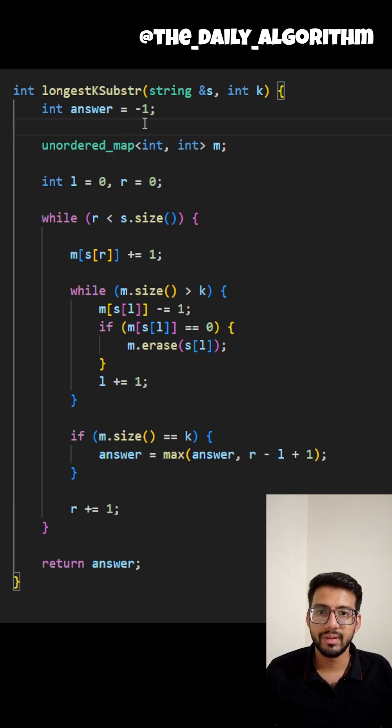Let's start writing the C++ code. Now, I've initiated my answer as minus 1 and I've got a map to store the frequency of elements between left and right pointers. I've initiated my left and right pointers to 0 and I'm moving my right pointer towards right. And at each step, I'm adding the element's frequency in my map.